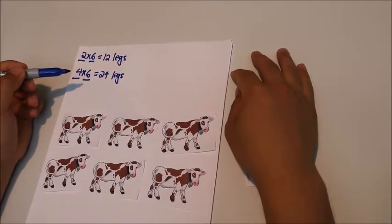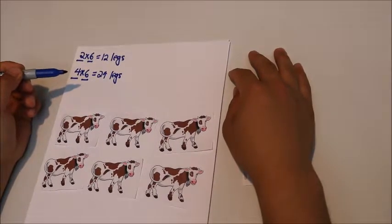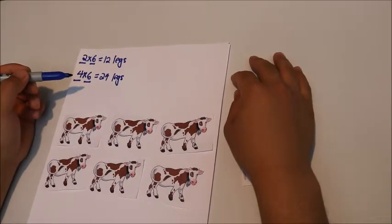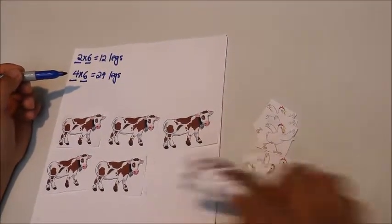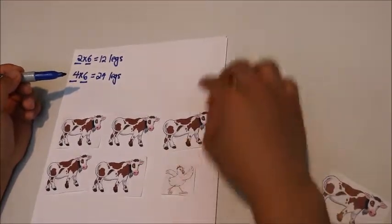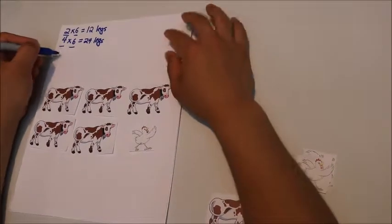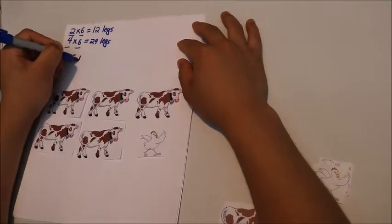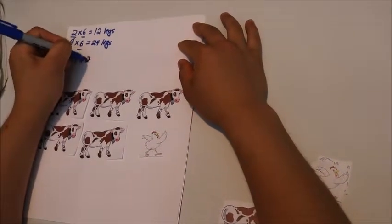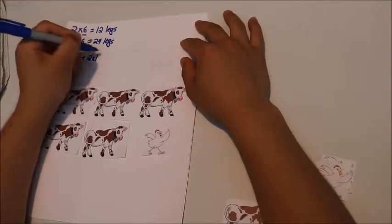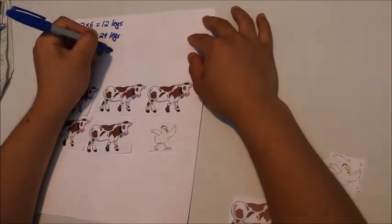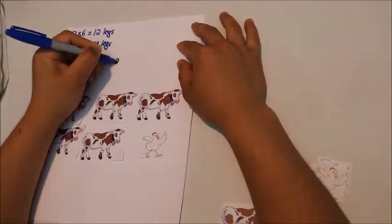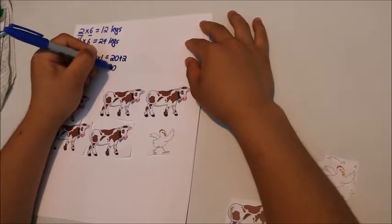So now we must consider if Old MacDonald has a mixture of chickens and cows. If we replace 1 cow with 1 chicken, there will be 4 legs times the 5 cows plus 2 legs times the 1 chicken. That will be equal to 20 plus 2 or 22 legs.